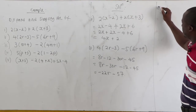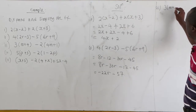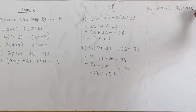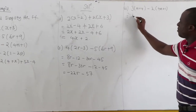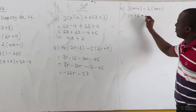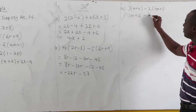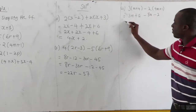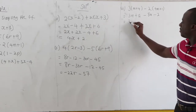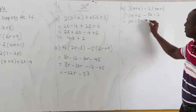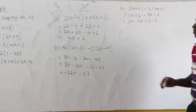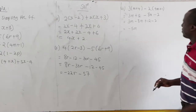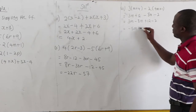Third: 3 times m plus 4 minus 2 times 4m plus 1. Expanding: 3 times m equals 3m, 3 times 4 equals 12. Then negative 2 times 4m equals negative 8m, and negative 2 times 1 equals negative 2. Grouping like terms: 3m minus 8m equals negative 5m, and 12 minus 2 equals 10.